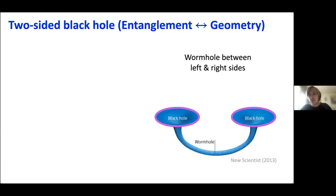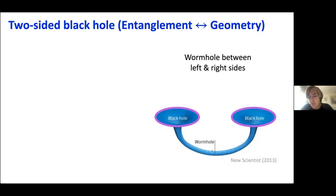From the perspective of either the left or the right sides, a wormhole looks just like an ordinary black hole — you can jump into it and never come out. It's a solution to Einstein's equations of general relativity where an observer from either side can jump in and never get out, but those observers can nevertheless meet in the middle. Someone jumping in from the left can meet someone jumping in from the right in the middle.